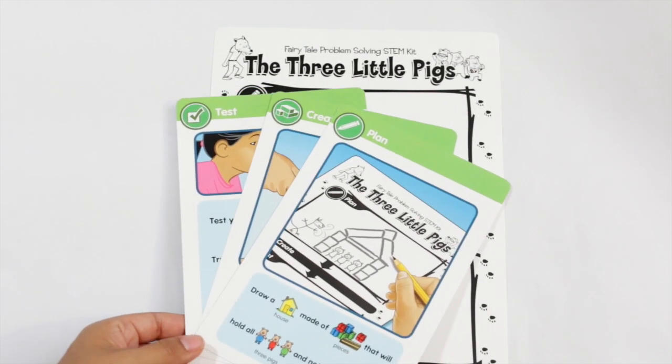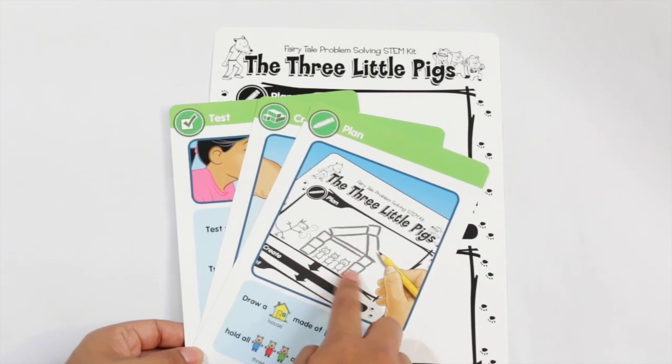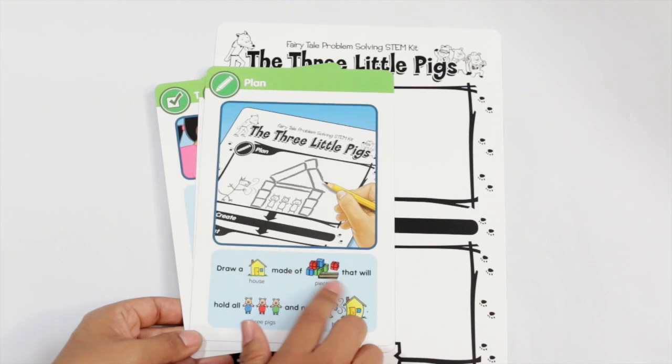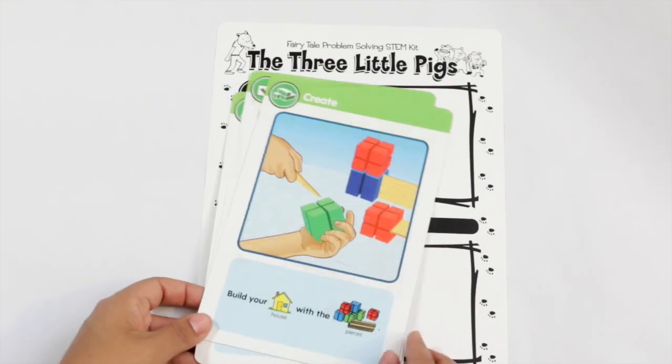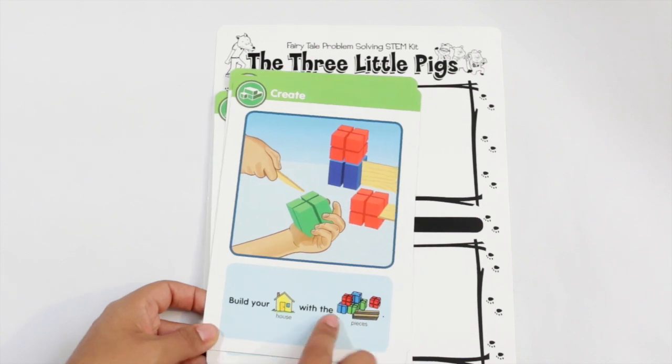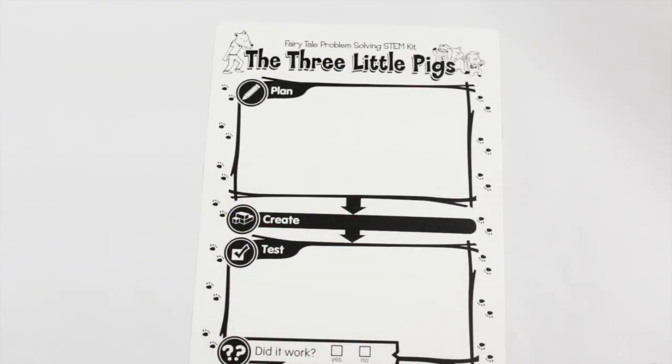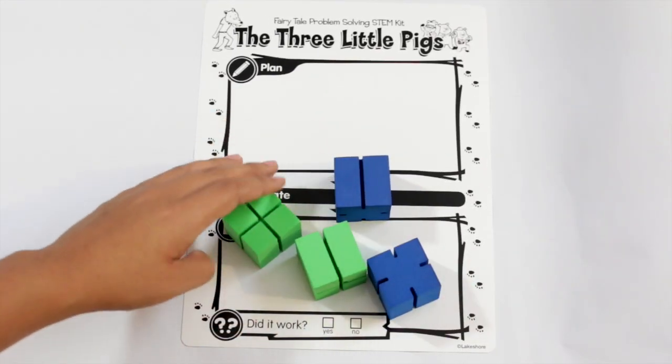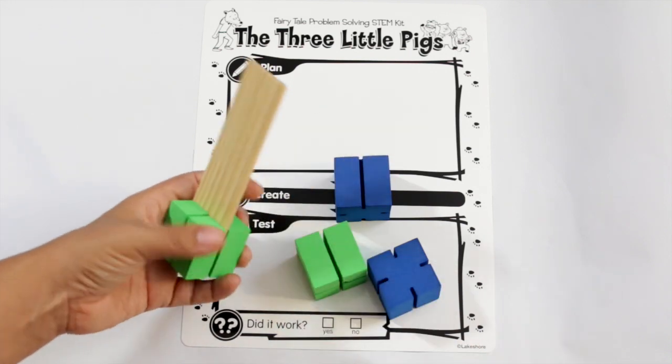You can also use these little cards for the students that help you walk through the process. So this first step that we're on right now is planning. And there's great little instructions down here that are cute. Draw a house made of pieces that will hold three pigs and not blow down. The next card says to create and build your house with all of the pieces. So now they take their drawing that they've done and all of the pieces and begin to create according to their model. The pieces fit right into these blocks.